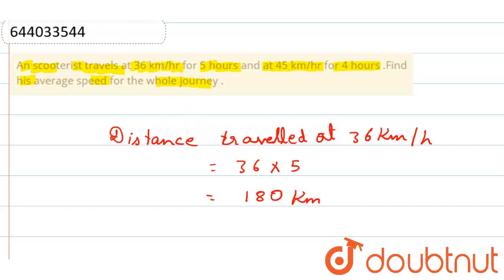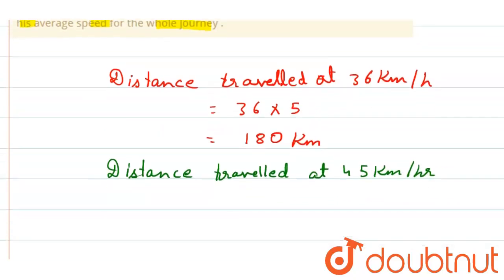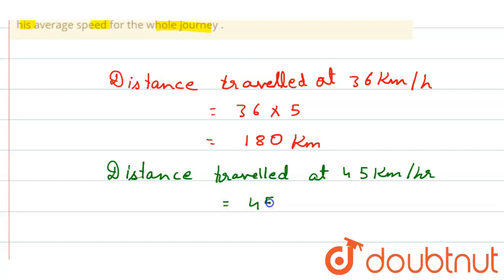Right, so now distance travelled at 45 km per hour, that is how much? 45 into 4, right? That equals to again 180 km.